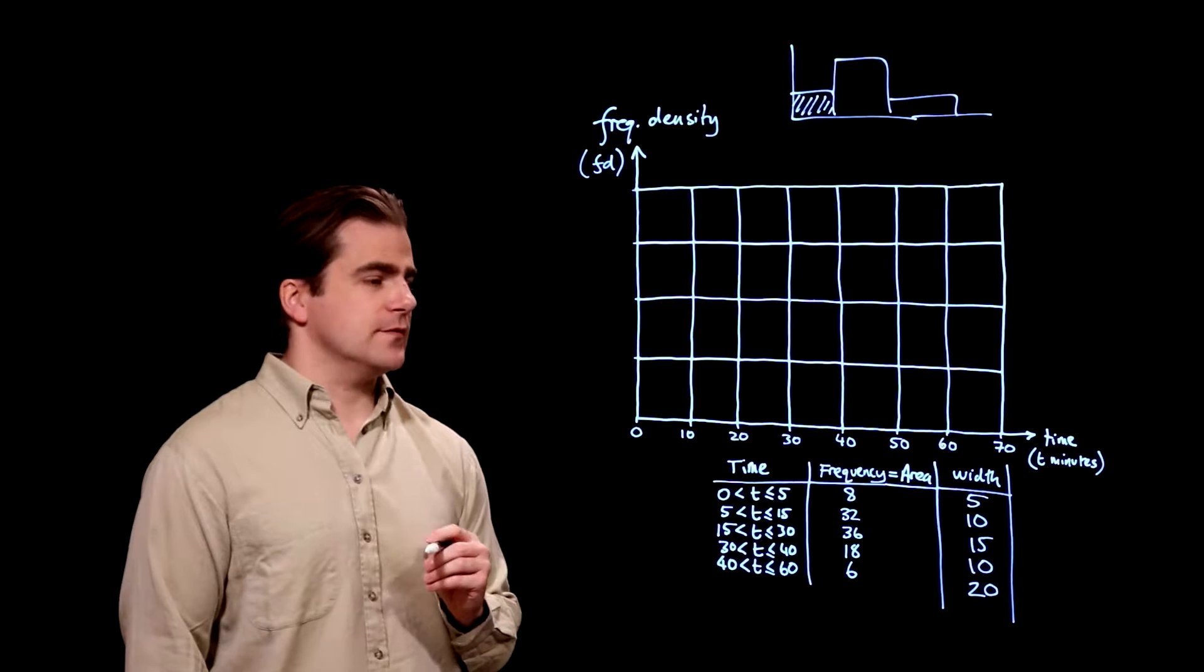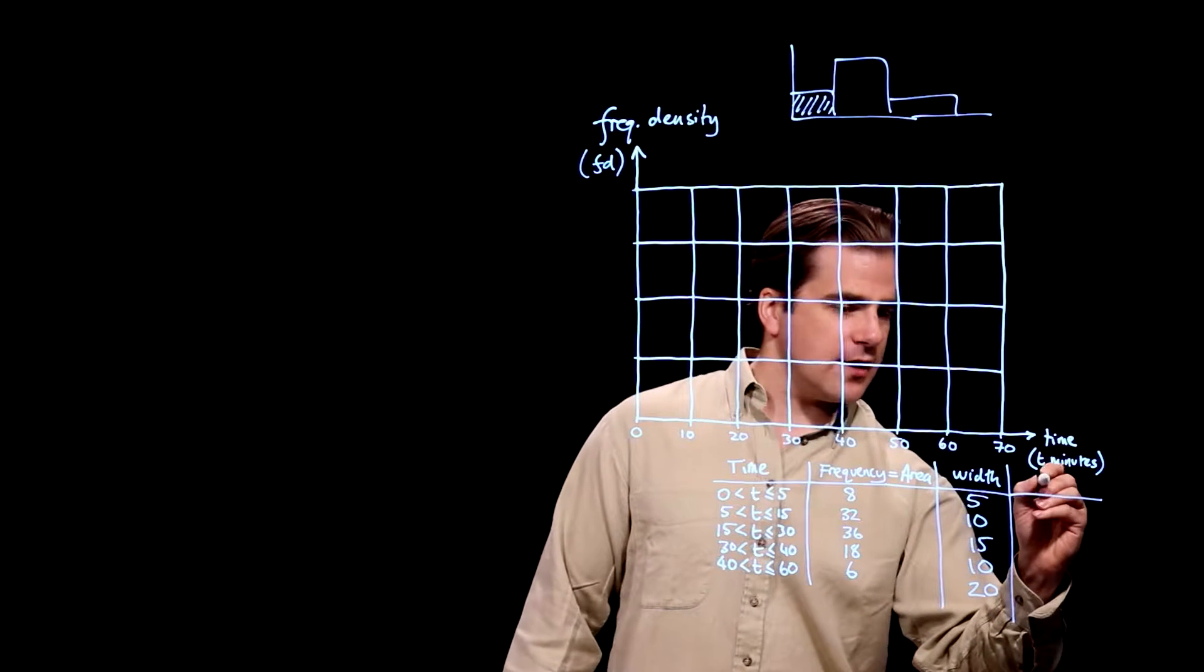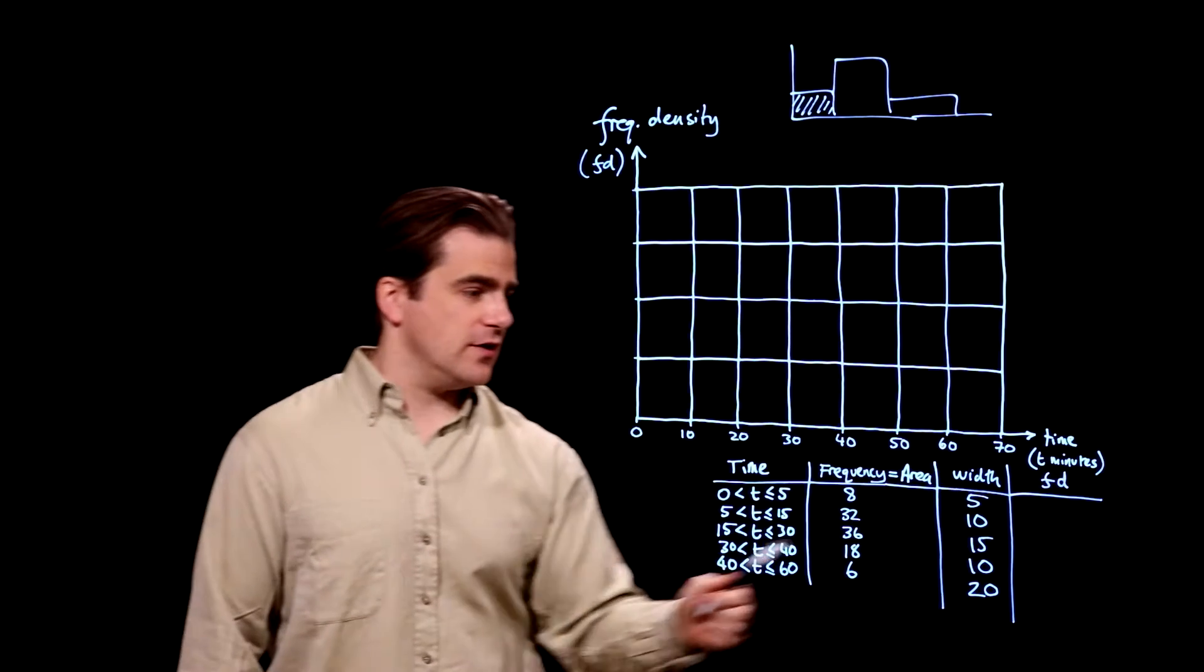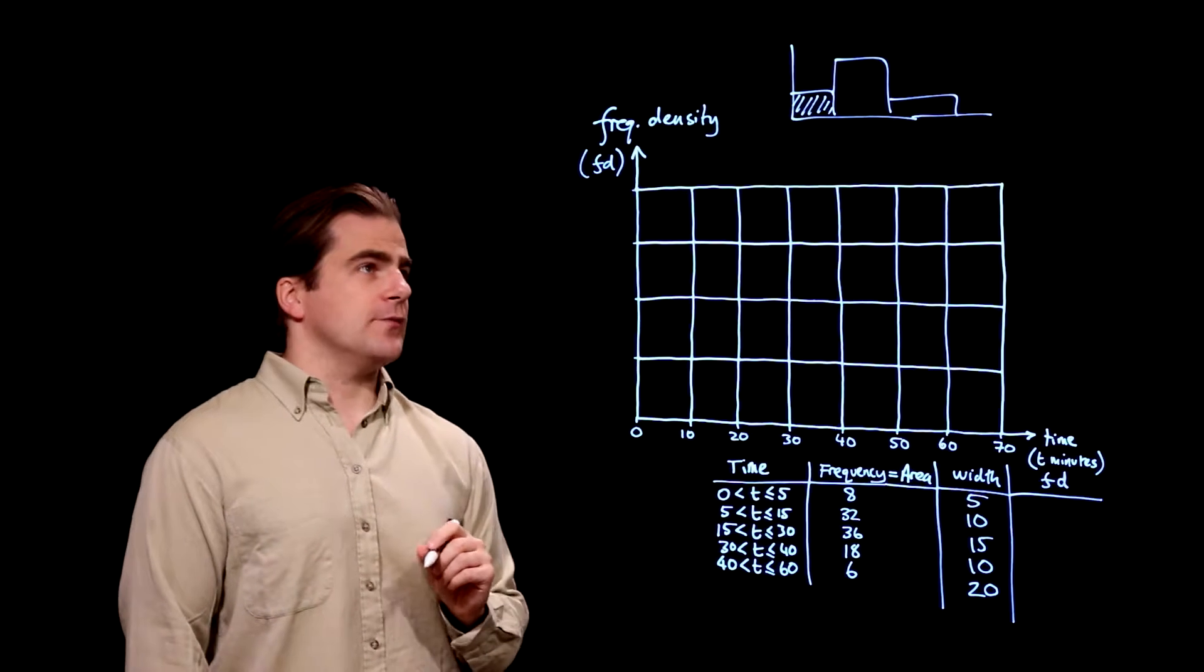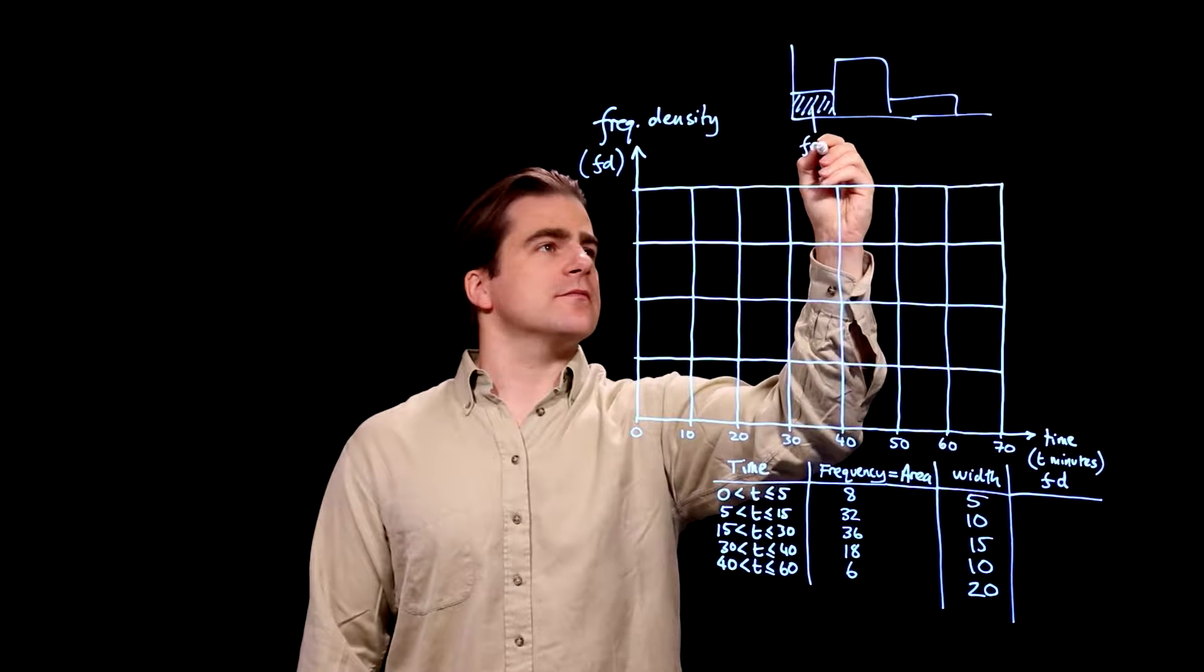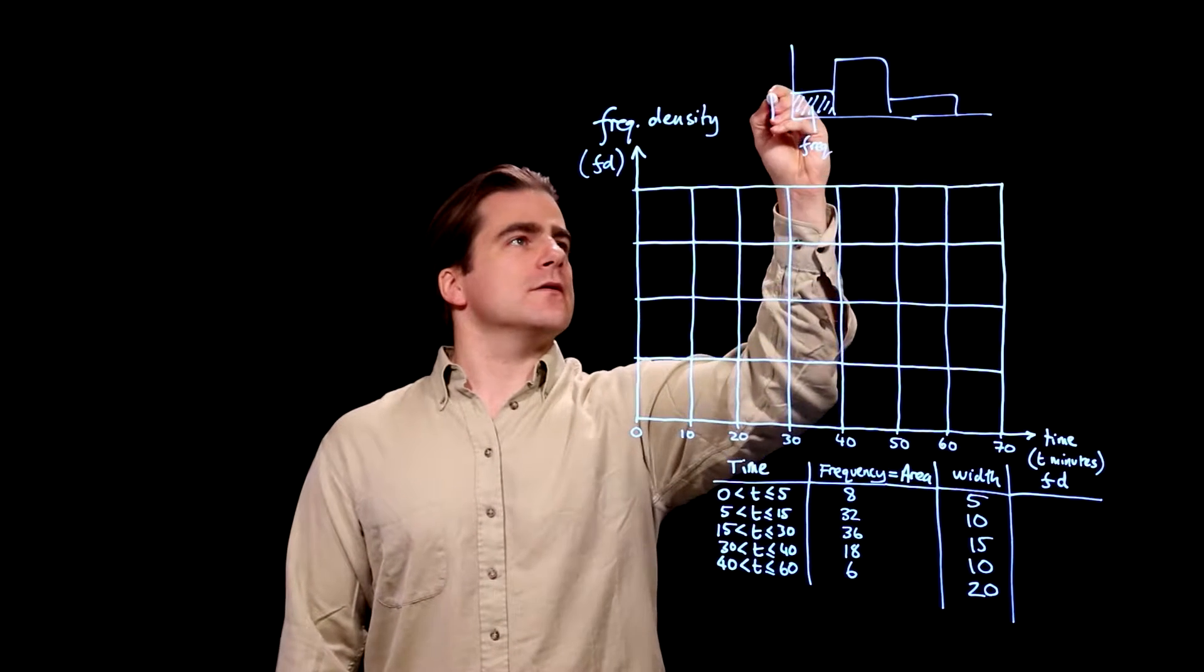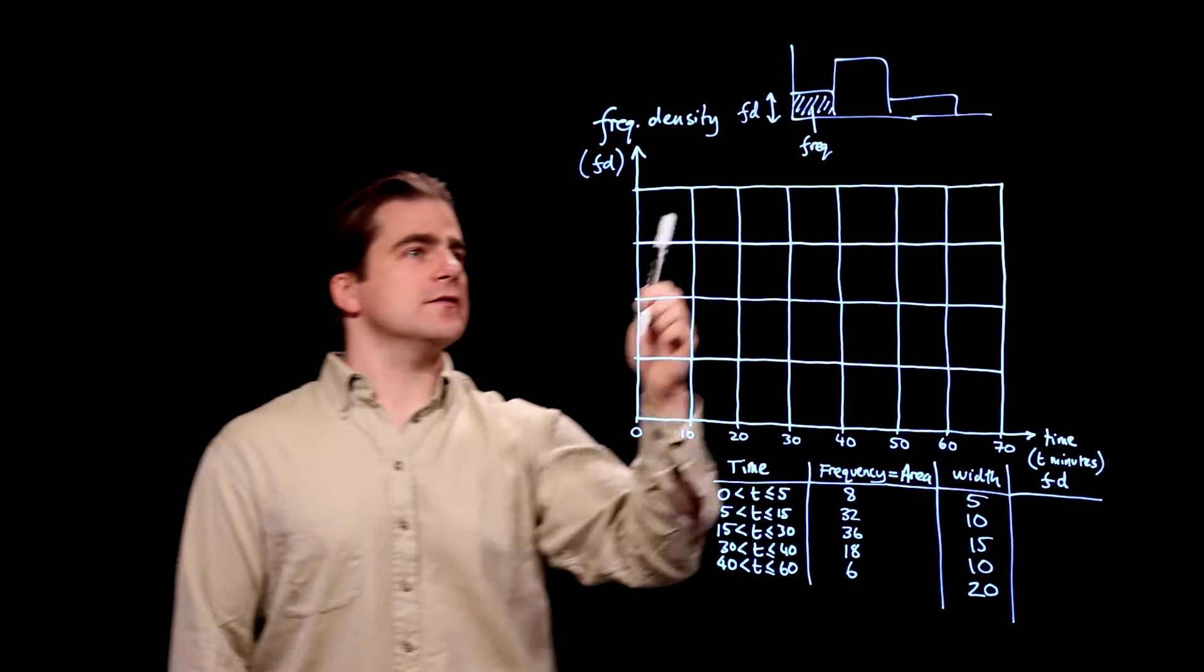Next, we're going to work out what the actual frequency density, the thing that we're going to plot, is for each of our five rows. Now, like I said, the area is the frequency, that's that. The height of this box is the frequency density, that.